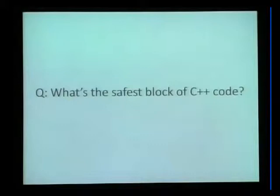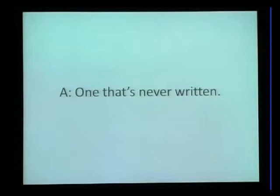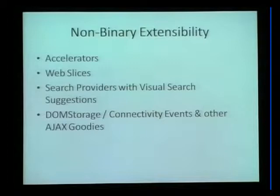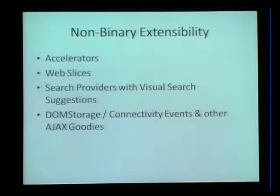Quiz for the audience: what's the safest block of C++ code? One that's never written. You make things faster by not running code, and you can also make things more secure by not running code. Internet Explorer 8 includes a bunch of new non-binary extensibility. Traditional security people might say that's not security, but it is — if you give unskilled or hurried developers safer alternatives that let them achieve their goals faster, more reliably, and more securely, they'll take them. IE8 includes accelerators, web slices, visual search suggestions, and new goodies for Ajax.